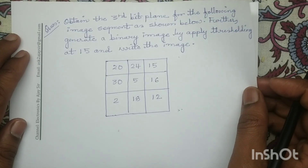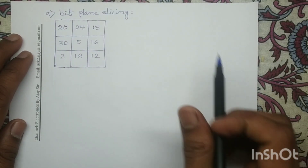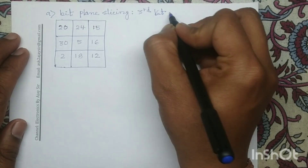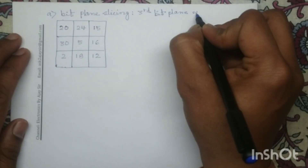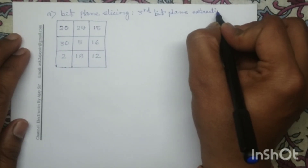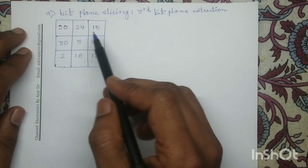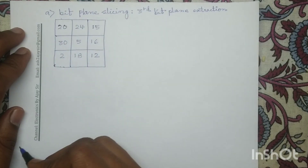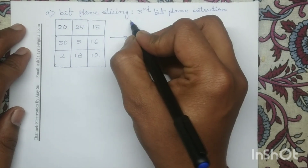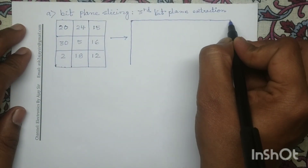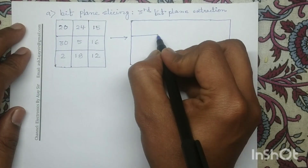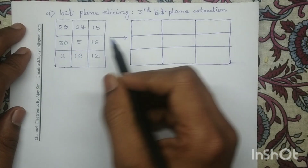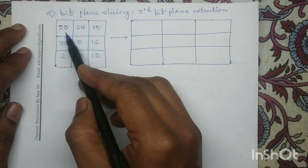First we will perform the bit plane slicing, and in bit plane slicing we have to extract the third bit plane. In order to perform the bit plane slicing, the pixel intensity values written here in decimal format we have to convert into binary format. Each pixel intensity value written in decimal format we will convert into its binary equivalent.